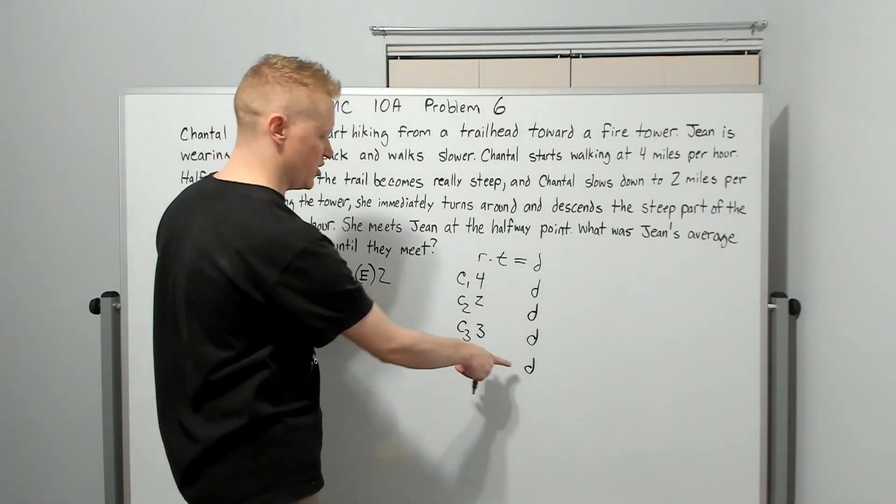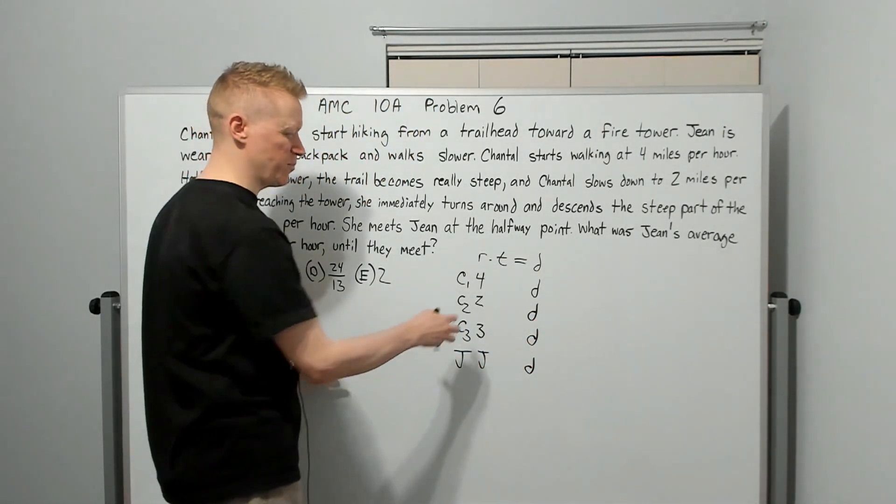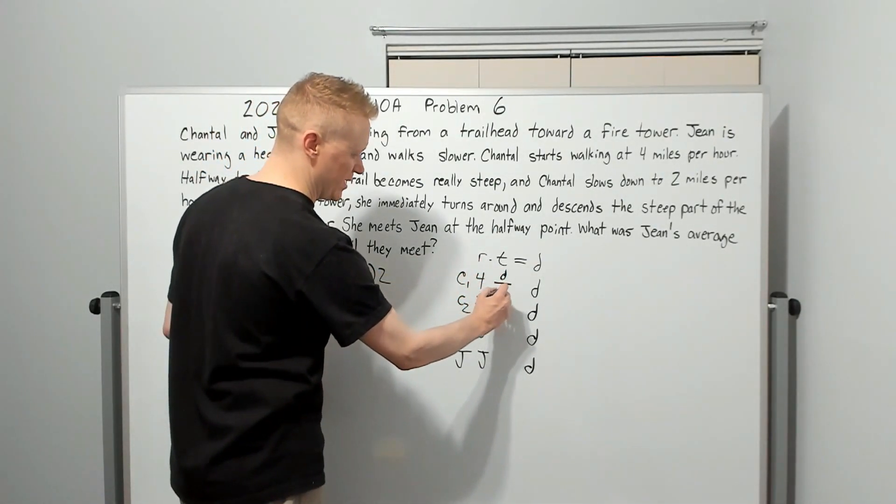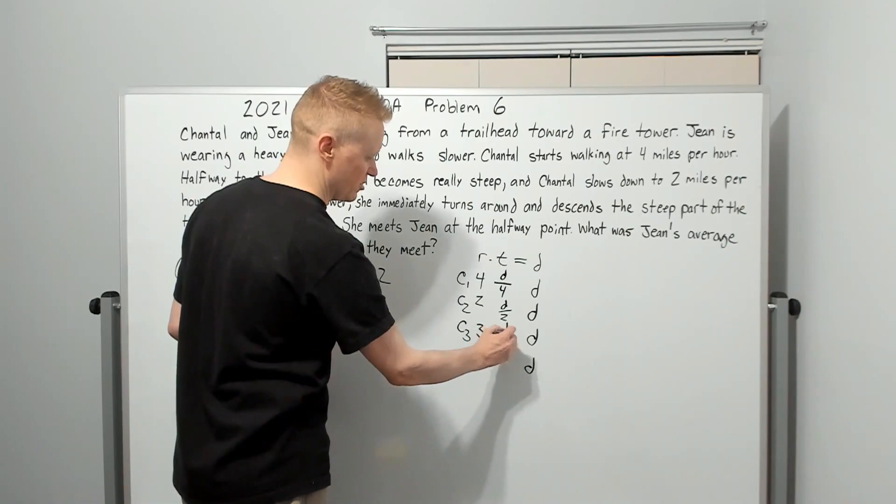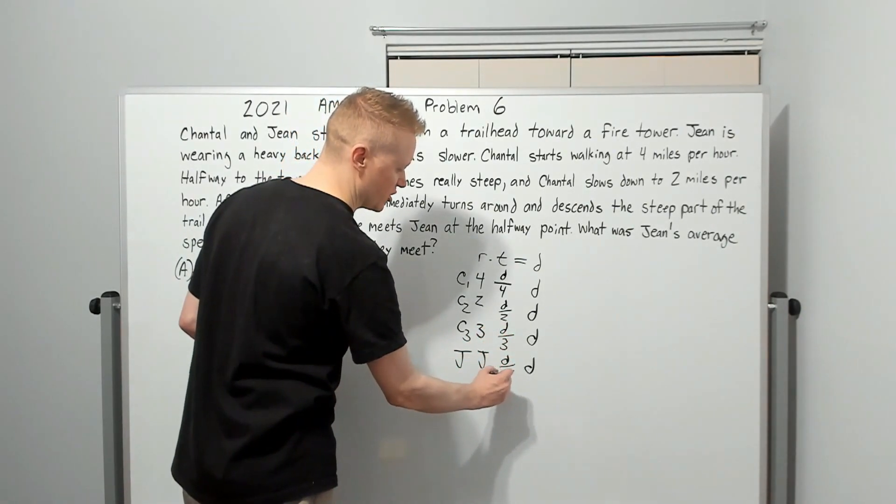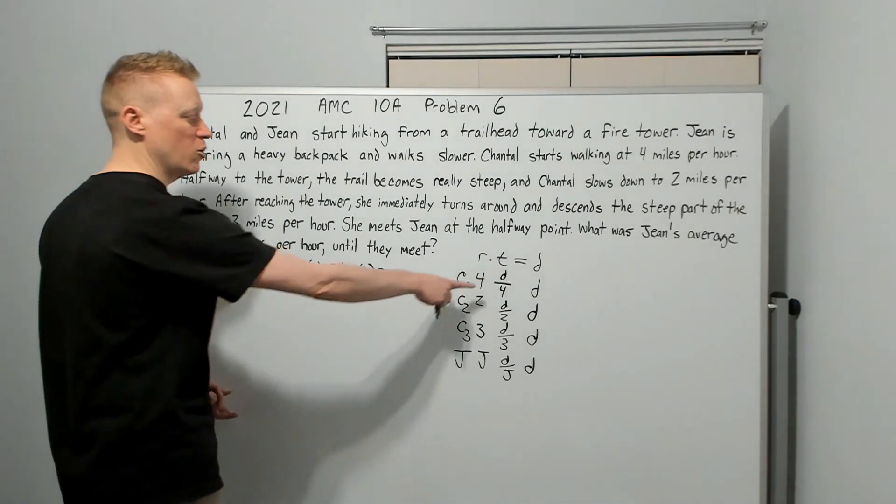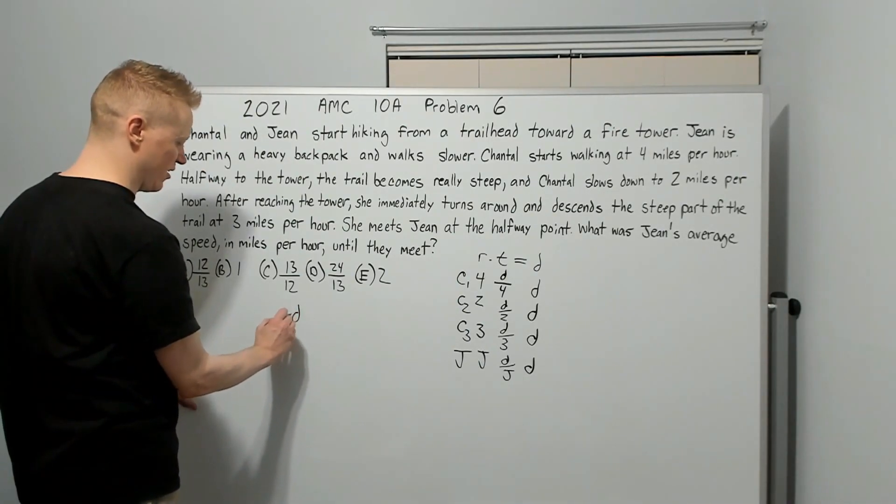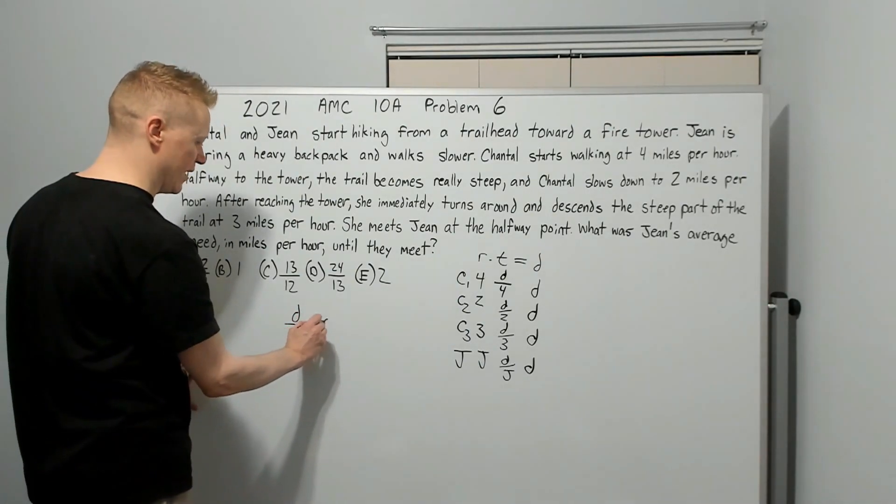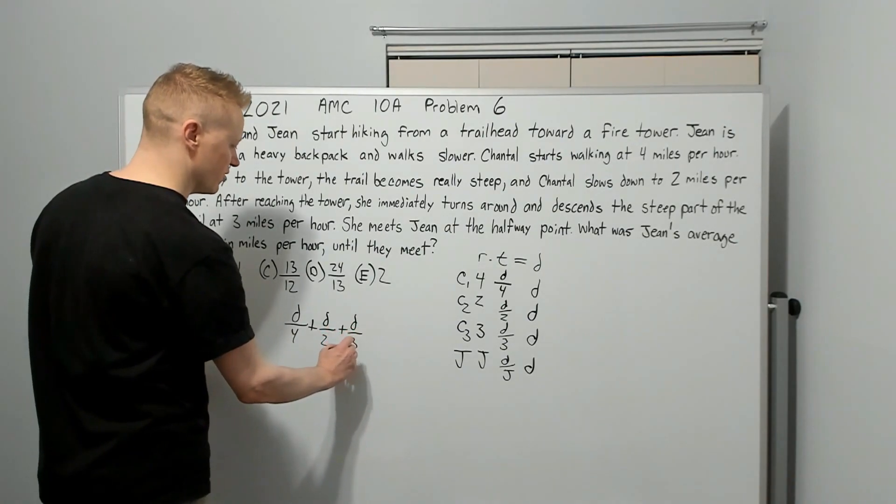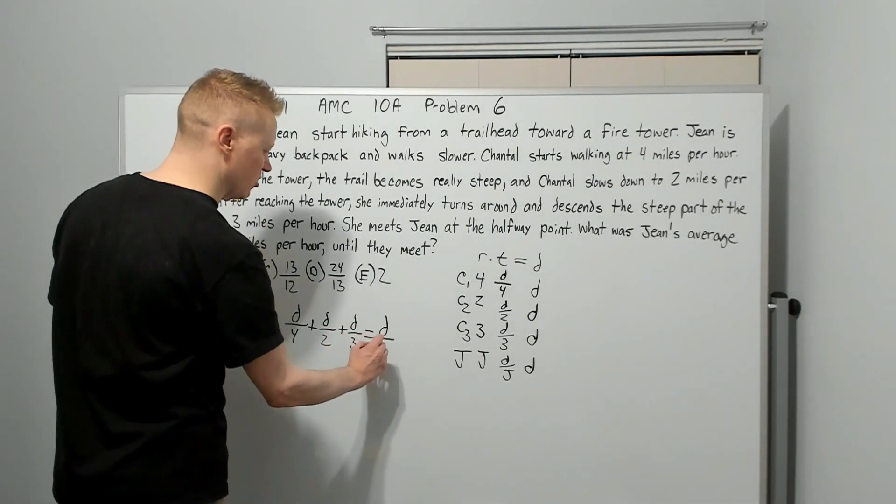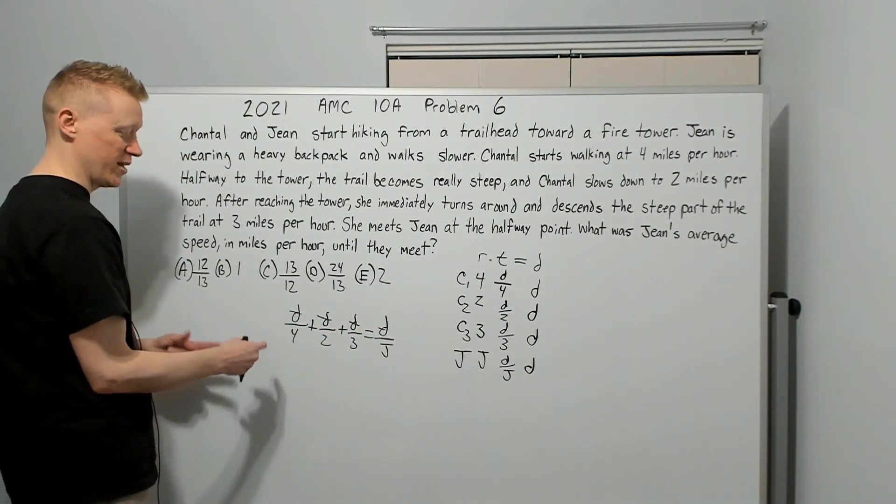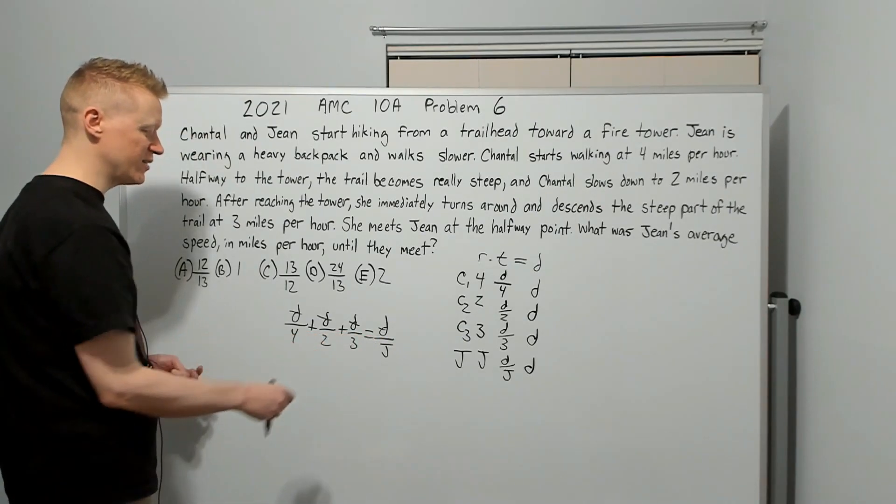Jean also walked a distance of D. What is average speed? It's total distance over total time. So Jean's total distance, we don't know what her time is. We probably need this time column. So let's just do D divided by four. This will be D over four, D over two, D over three, and D over J. And it must mean the total time that Chantel walked equals the time that Jean walked. And all of those Ds are about to go away.